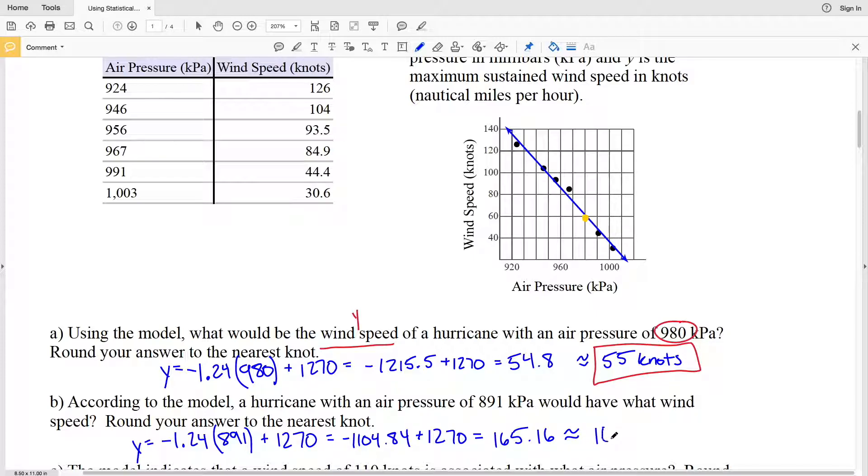So 165 knots is our solution in part B. According to the model, when we have an air pressure of 891 millibars, we'll have a wind speed of approximately 165 knots.